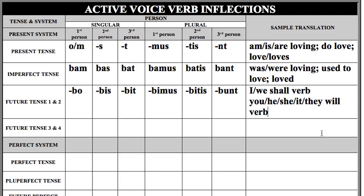So those are the future tense endings for first and second conjugation: bo, bis, bit, bimus, bitis, bunt. Remember that because we are still in the present system, we find the base of the verb by going to our second principal part. First and second conjugation verbs use the same connecting vowel: if you're adding these endings to a first conjugation verb, you'll see the letter A in front of them, and if you're adding them to a second conjugation verb, you'll see the letter E in front of them.